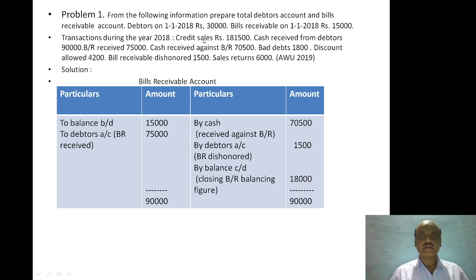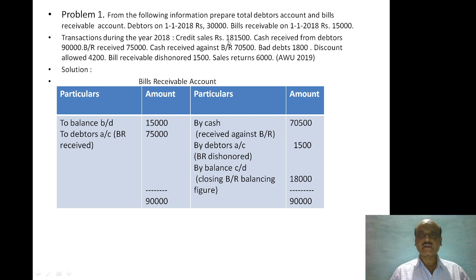If you look at the credit sales, you will see the total debtors. You will see the debtors on 1-1-2018. Credit sales will be on the total debtors debit side. There are two credit sales entries. Then cash received from debtors — this goes to the debtors account credit side, by cash.